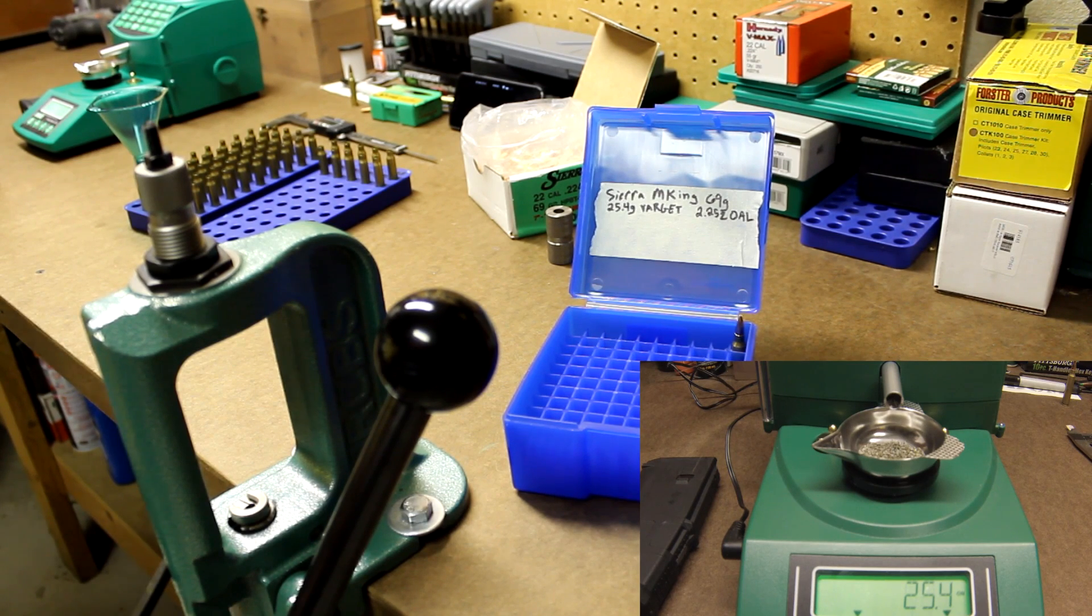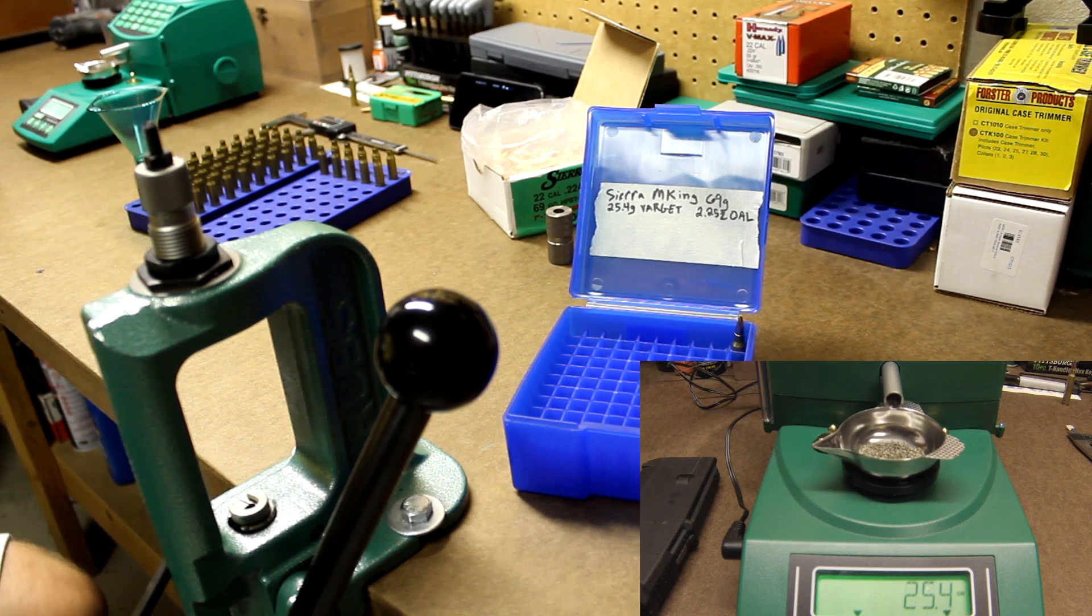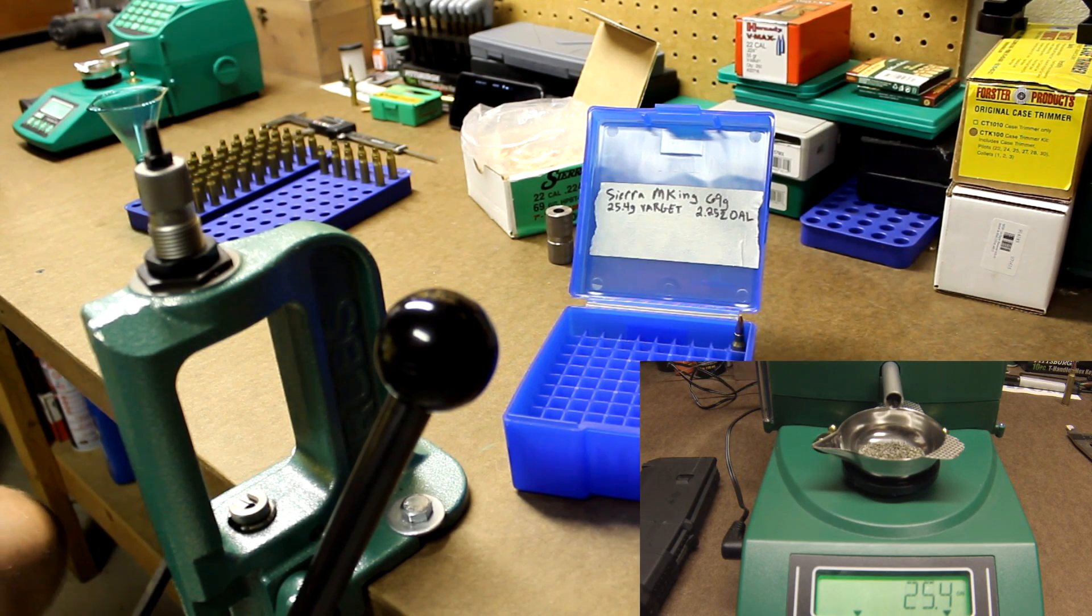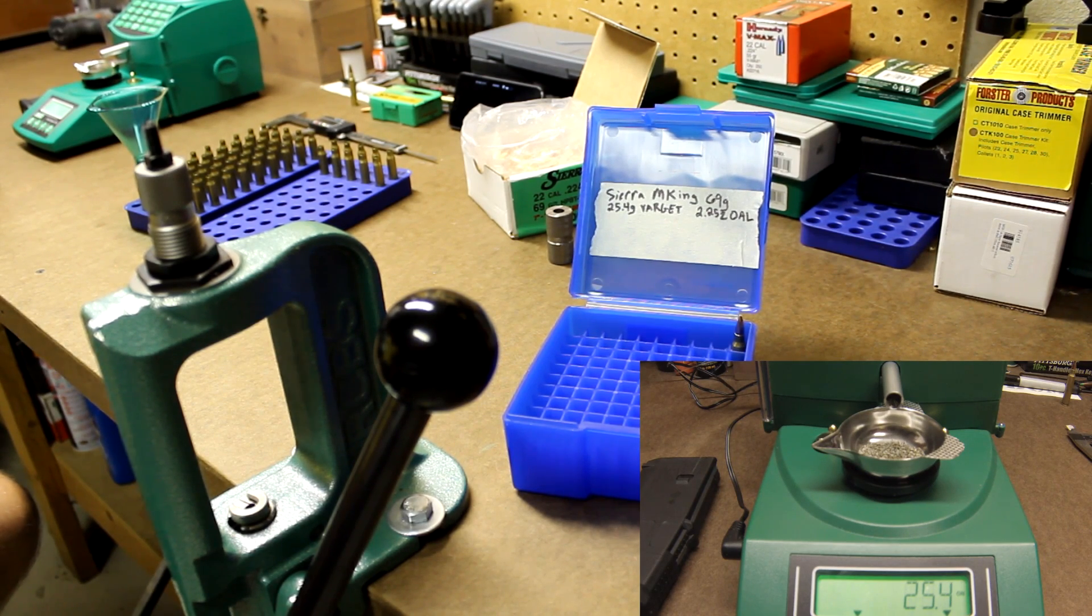Finally, your press should be adjusted so the cartridge overall length is set to the proper specification after seating a bullet. So if you're reloading for a magazine fed rifle like an AR-15, double check to make sure your cartridge overall length is short enough to fit in the magazine. You don't want to create all your rounds and then have them not fit in your magazine. You'd have to either feed them singly or pull all the bullets out and redo them or reset your die and seat them down further.